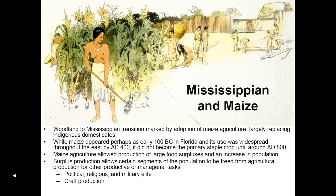Maize is much more productive per acre than the earlier indigenous domesticates. It allowed larger food surpluses to be produced and accumulated, and allowed a growing population to be fed. The production of surpluses allowed certain segments of the population to be freed from agricultural tasks and to perform other productive tasks or managerial roles — full-time specialization in things like producing pottery, textiles, or baskets, or performing political, religious, or military roles.